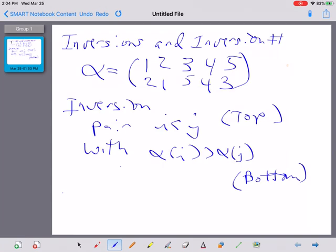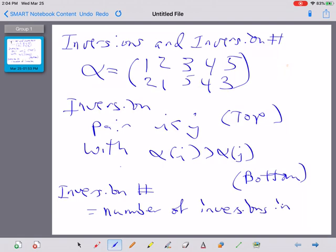And the inversion number for a particular permutation is just the number of inversions in alpha. And I would suggest that you stop the video and copy this stuff down into your notes.